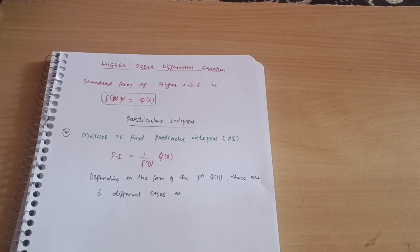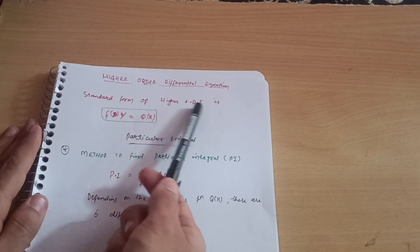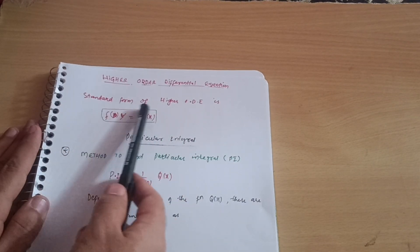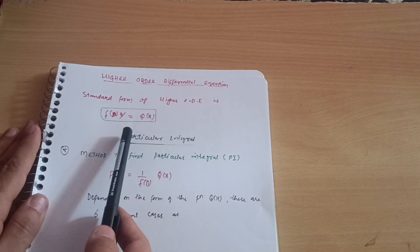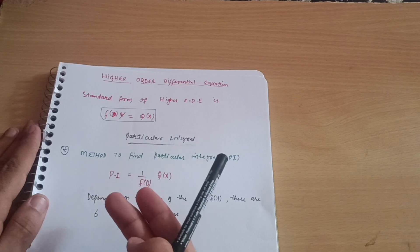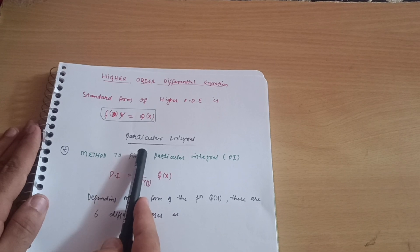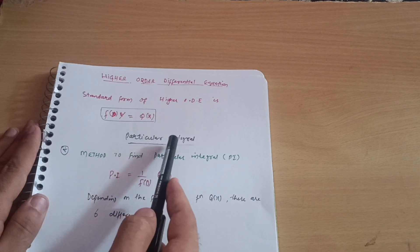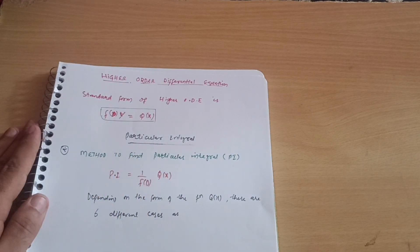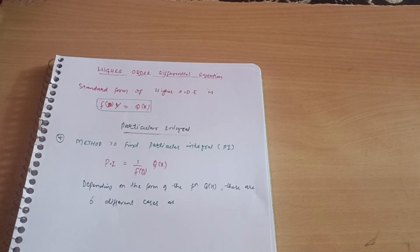In the previous video we discussed the complementary function. The standard form of higher order differential equation is f(D)y = Q(x). For finding the solution, we calculate two things: the complementary function and the particular integral. Complementary function plus particular integral gives the complete solution. Now in this video we will discuss the particular integral and the method of finding it.